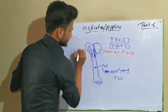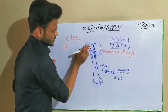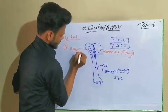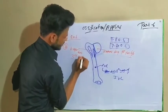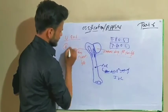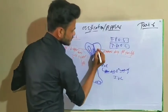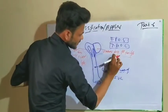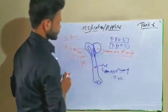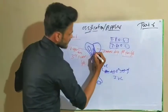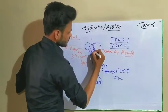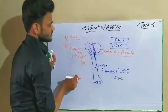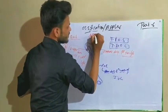The secondary ossification center on the greater tubercle appears during the third year of life. The secondary ossification center on the lesser tubercle appears during the fifth year of life.